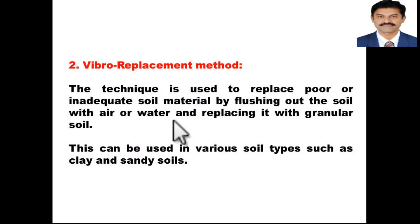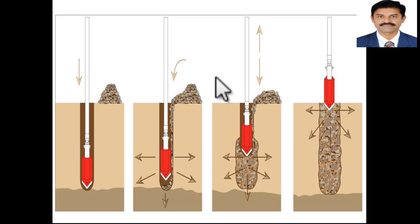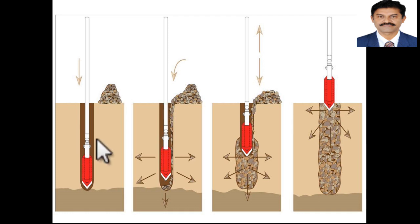In the Vibroreplacement method, the goal is to replace poor soil — that is, problematic fine-grained soil which is not adequate enough to withstand the superstructure loading. That soil is flushed out with air or water and replaced with granular soil. This can be used in various soil types such as clay or sandy soils. This schematic shows how the Vibrofloat is utilized for displacement and backfilling of granular material. Initially a cavity is formed, surrounding soil is densified, then granular material is poured in, vibrated, compacted, and the probe is withdrawn.